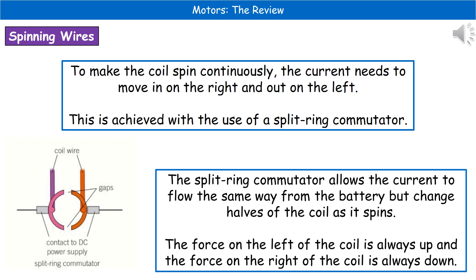By using this split ring commutator, the current is able to flow the same way from the battery, but it's not going to change the direction of the coil spinning. So what we find is that the force on the left of the coil is always up and the force on the right of the coil is always down. So we have that continuous motion in the one direction.